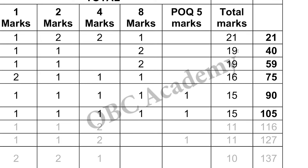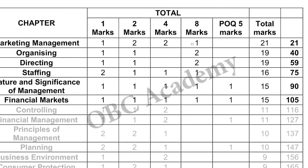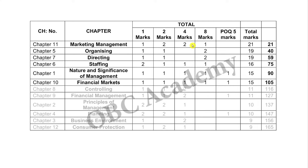You have got 21 marks in the first chapter. The first chapter is marketing management, same marks. Organizing is the same. 2 chapters are the same marks. Directing, organizing and marketing management — MM is the same marks. Staffing and sales are the same marks. Nature and Significance of Management is 90 marks.